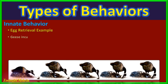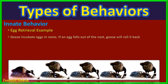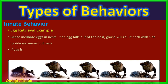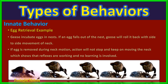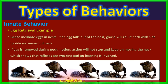Geese incubate their eggs in nests built by them. If by chance an egg falls out of the nest, the goose identifies it as a sign stimulus and rolls it back into the nest with a side-to-side movement of its neck. Importantly, when the neck movement starts to retrieve the egg, it will not stop in between — if the egg is removed mid-movement, the goose will continue the motion of its neck until the end of the reflex even in the absence of the stimulus. This shows that egg retrieval is innate behavior, not learned.